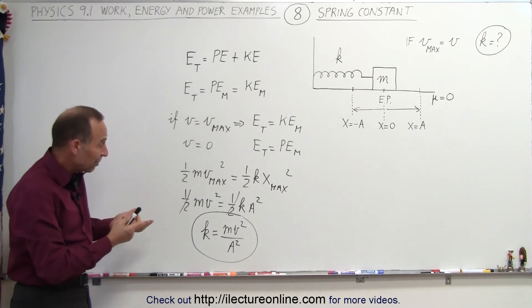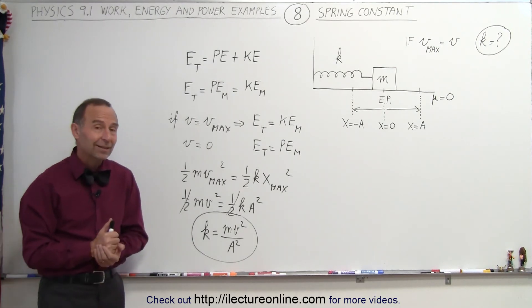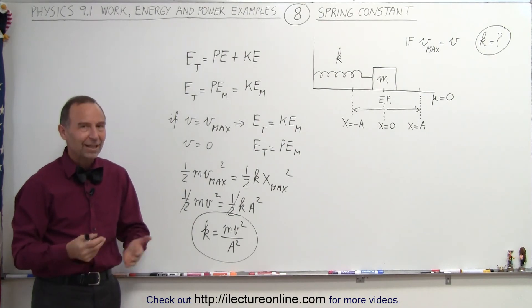All we have to do is know what m is, what v is, and what the amplitude is, and from that we can calculate the spring constant. And that's how it's done.